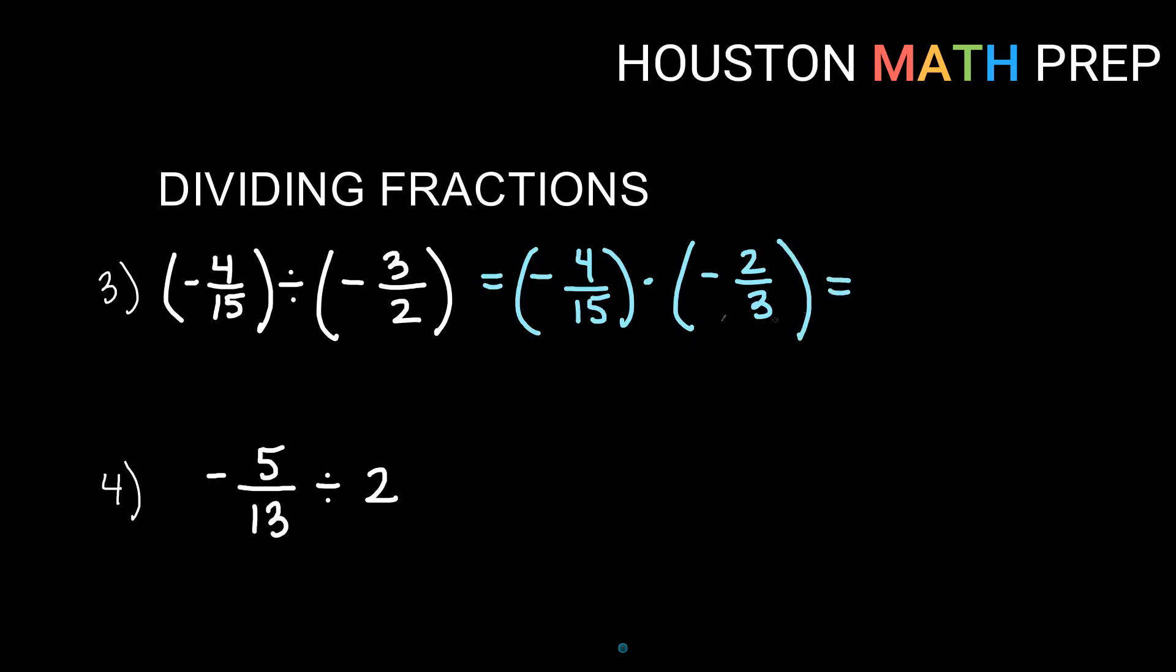So in this case, because I'm multiplying with two things that are the same sign, even though they're both negative, a negative times a negative is a positive. So I have a positive answer, and then here if I go straight across, I have two times four is eight, and 15 times three will give me 45 on the bottom. Nothing to reduce on that one.